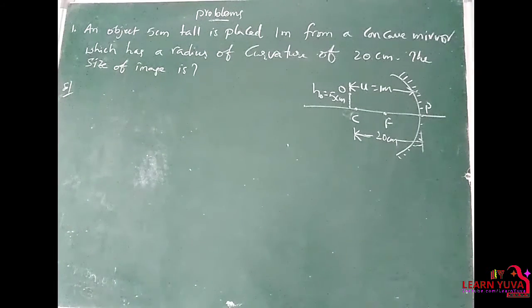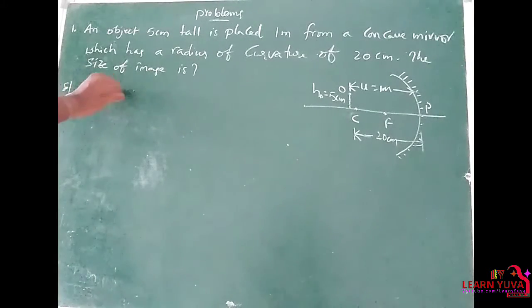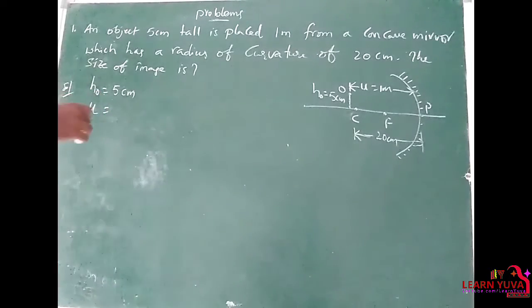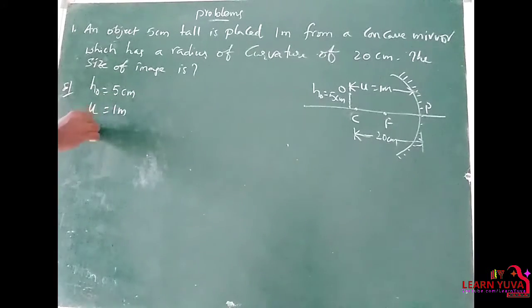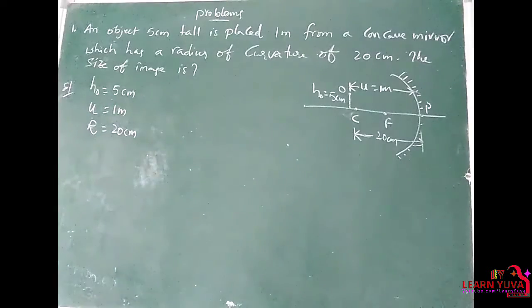Given: height of object is equal to 5 cm. U, the distance of the object, is 1 meter. Radius of curvature R is equal to 20 cm. That is the given data.